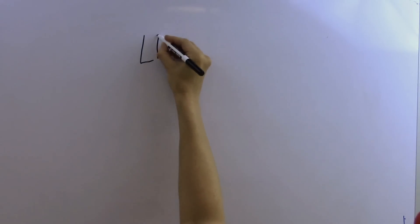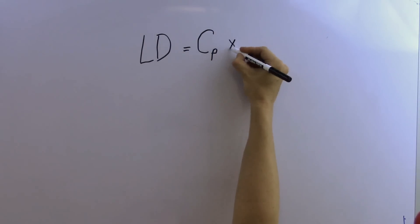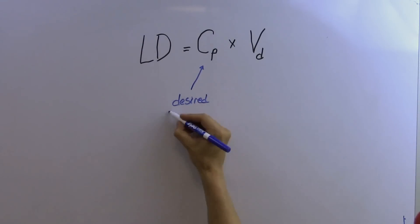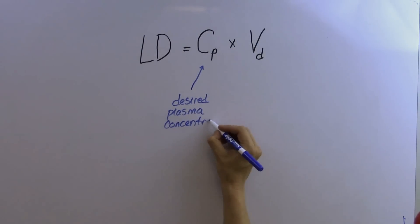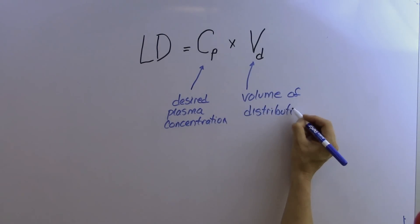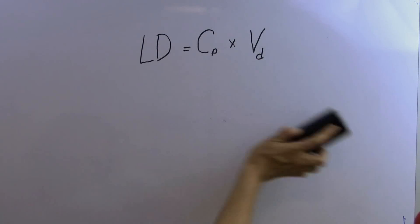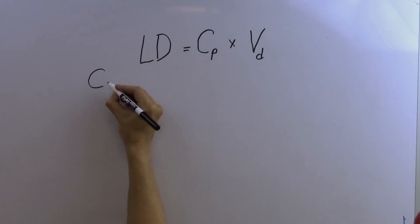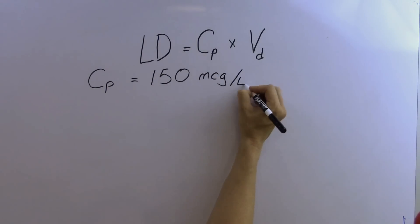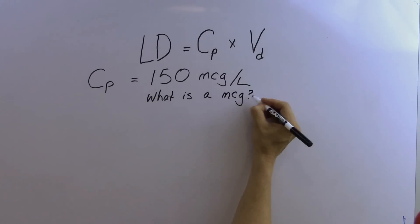We can calculate this using the formula: LD equals CP times VD. Here, CP is the desired plasma concentration of the drug and VD is its volume of distribution. We already know the desired plasma concentration is 150 mcg per liter, but what is an mcg?